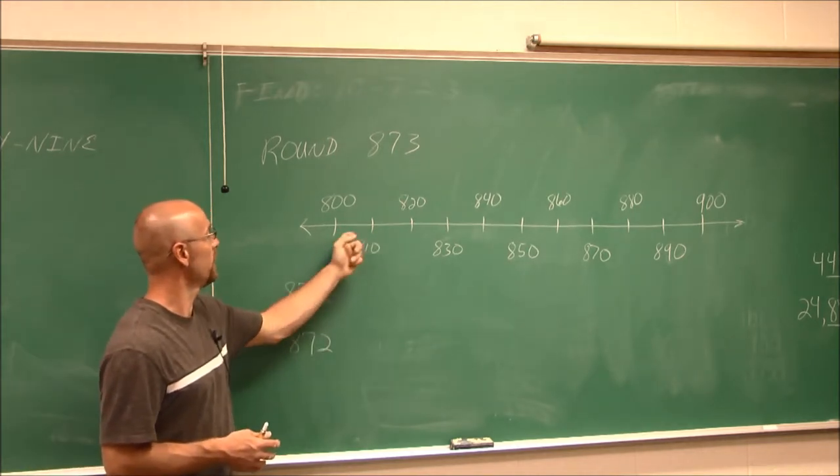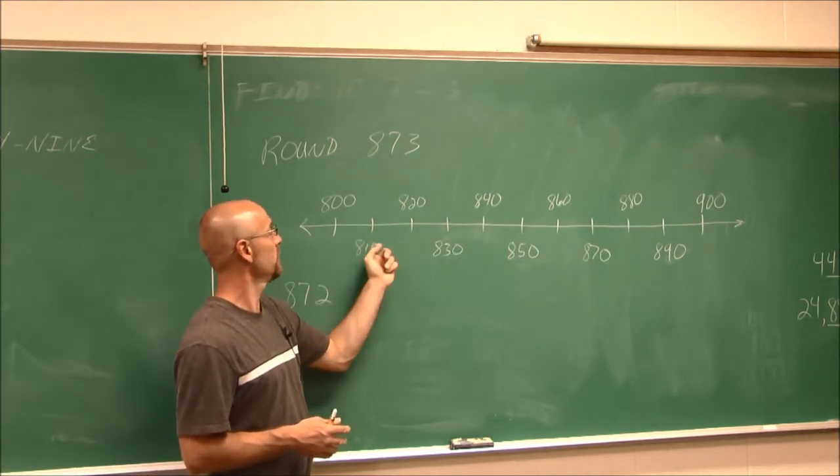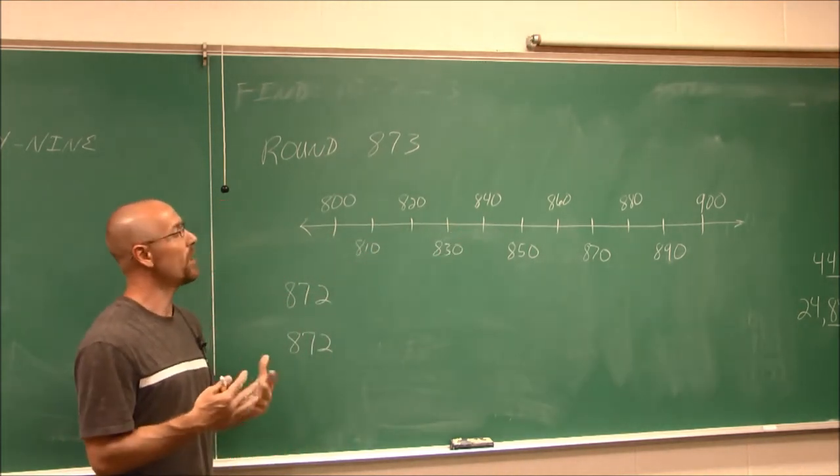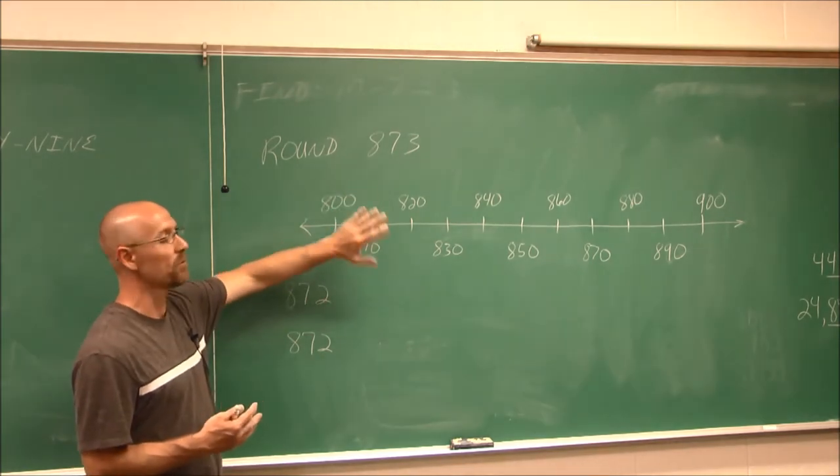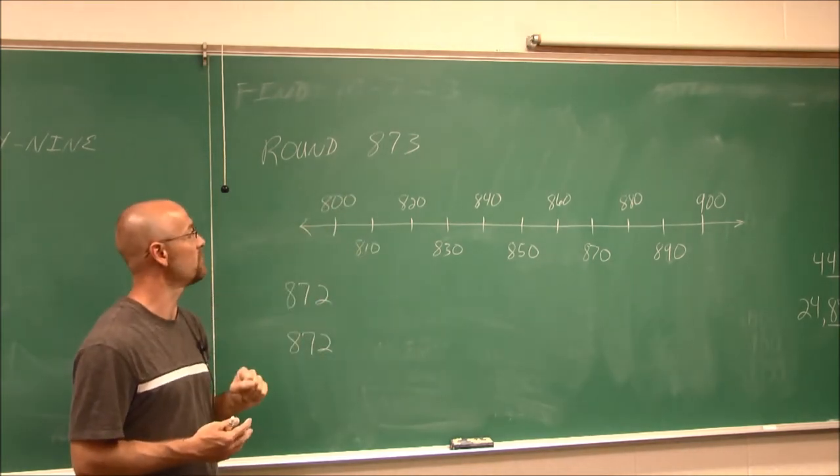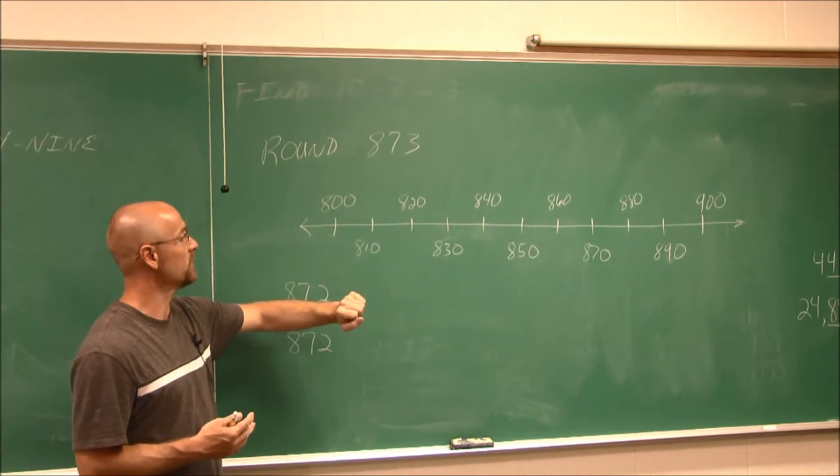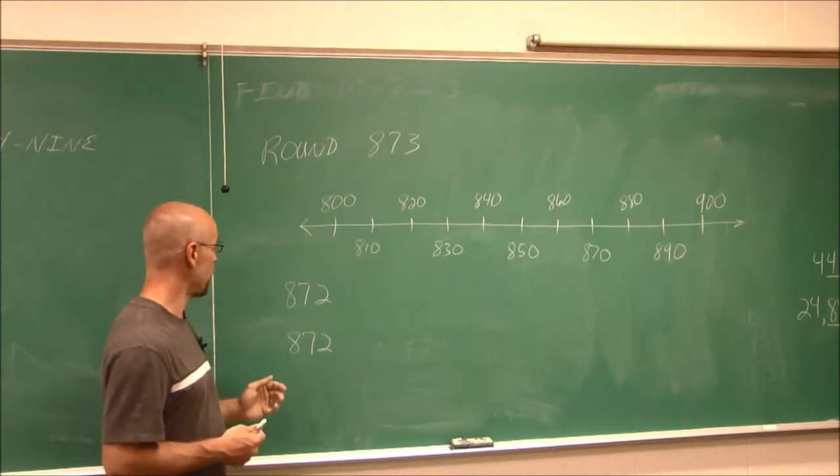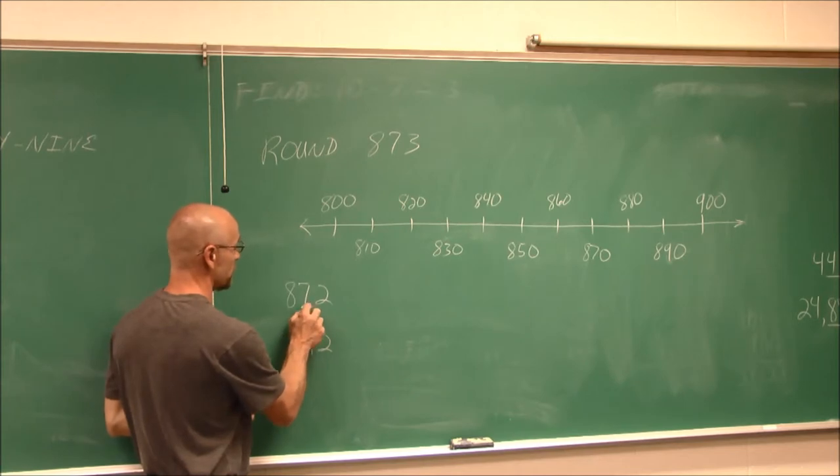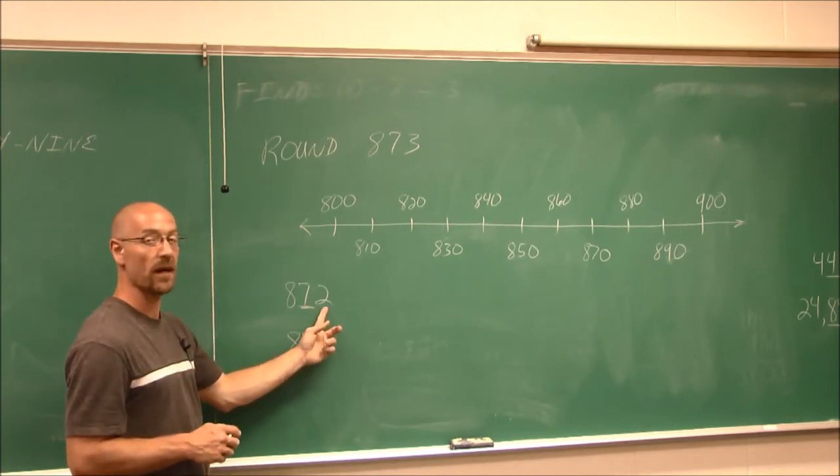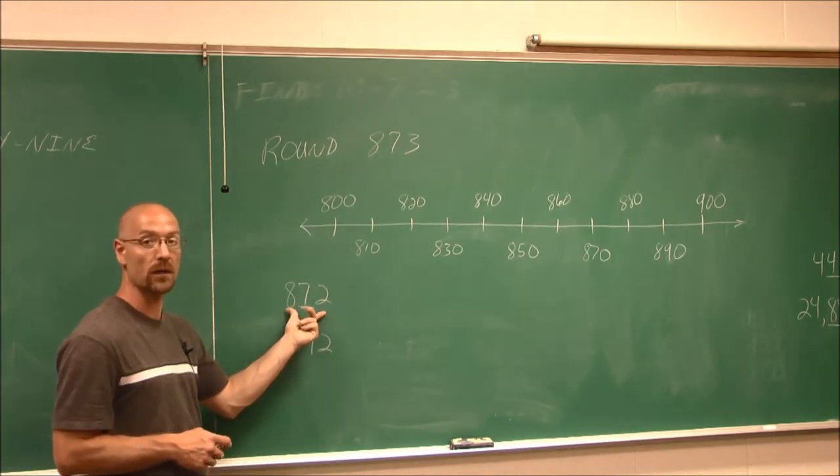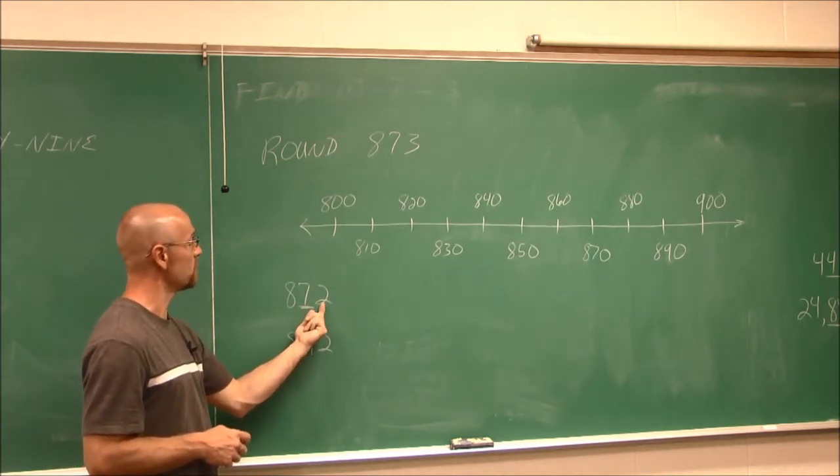So first thing I'm going to do is I'm going to use a number line to represent this value. If I were to put this value on the number line, well, I look at my number line and it only has tick marks that are separated by 10s: 800, 810, all the way to 900. So I want to estimate where would this number fall on this number line. Well, since it only has ticks of 10, I want to round this to the 10s place. So if I'm going to round it to the 10s place, I have to look at the value to the right. The value to the right is what we use to round our number.